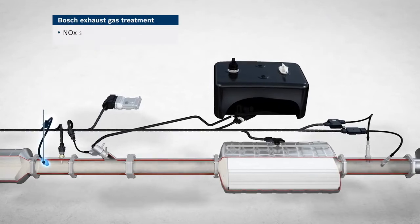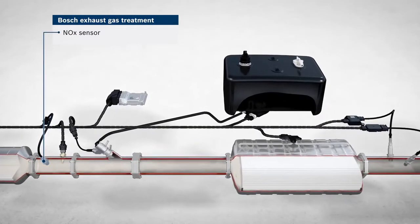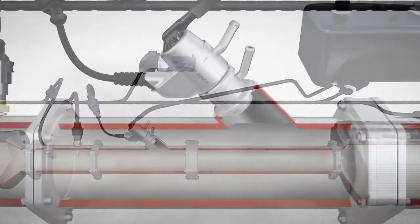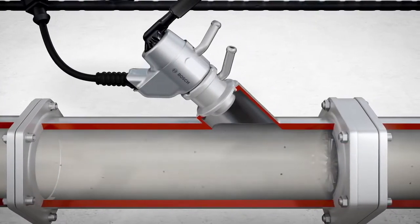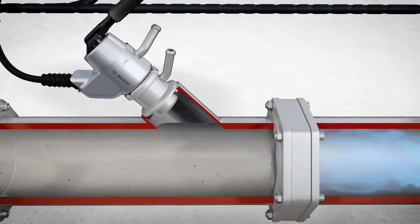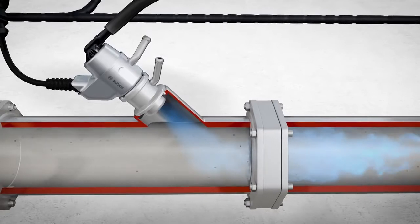First, an NOx sensor upstream of the dosing point for AdBlue detects the amount of nitric oxide still present in the exhaust gas. The Denoxtronic then uses the dosing module to inject the corresponding amount of AdBlue into the exhaust gas upstream of the SCR catalyst.